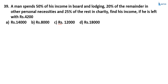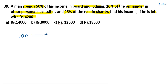A man spends 50% of his income on boarding and lodging, 20% of the remainder on other personal necessities, and 20% of the rest on charity. Find his income if he is left with 4200 rupees. Suppose a person had 100 rupees. He spent 50%, so 50 rupees on lodging and boarding, leaving 50 rupees.